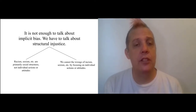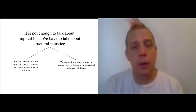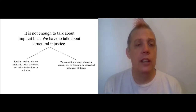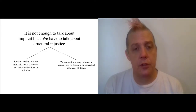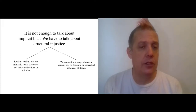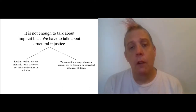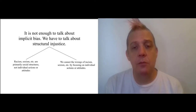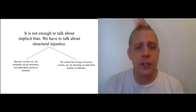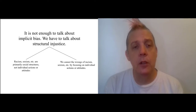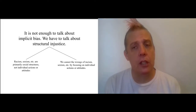Haslinger has two basic lines of argument for the claim that we need to talk not just about implicit bias but about structural injustice. One is that things like racism and sexism are primarily social structures — that's the key to them. They're not individual actions or attitudes, whether those attitudes are conscious or unconscious. Furthermore, we cannot right the wrongs of racism, sexism, etc. simply by focusing on individual actions or attitudes. Basically, the problem isn't individual attitudes and the problem can't be solved by focusing on individual attitudes.